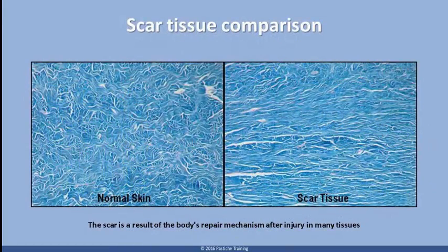The scar is a result of the body's repair mechanism after injury in many tissues. Scar tissue is composed of the same protein, collagen, as the tissue that it replaces, but the fibre composition of the protein is different. Instead of a random basket weave formation of the collagen fibres found in normal tissue, in fibrosis the collagen cross-links and forms a pronounced alignment in a single direction. This collagen scar tissue alignment is usually of inferior functional quality to the normal collagen-randomised arrangement.